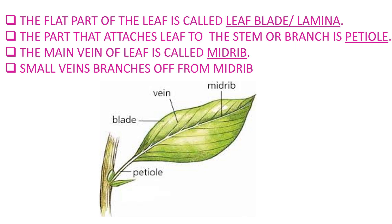The flat part of the leaf is called the leaflet or lamina. The part that attaches the leaf to the stem or branch is the petiole. The main vein of the leaf is called the midrib. Small veins branch off from the midrib.